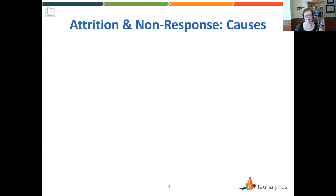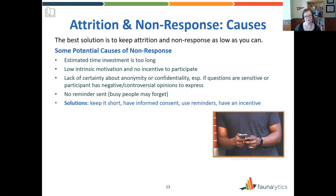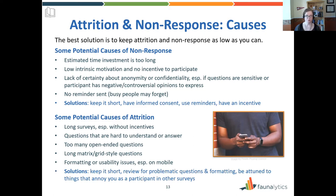This reference slide covers some causes of attrition and non-response. The best solution is to keep both as low as possible. Consider these causes and their solutions: keep your survey short, have informed consent at the beginning so people know what they're getting into, use reminders, and offer an incentive if you can. Also consider causes of attrition — when people drop out partway through. Keep it short, review for problematic questions and annoying formatting issues, and keep an eye on other surveys you complete, whether from your grocery store or cell phone provider — keep track of what annoys you, and make sure you don't do it to others.